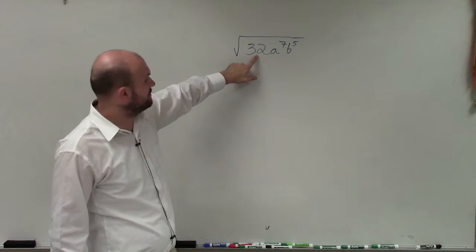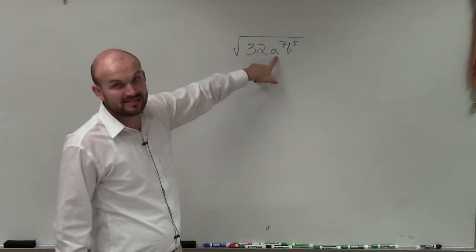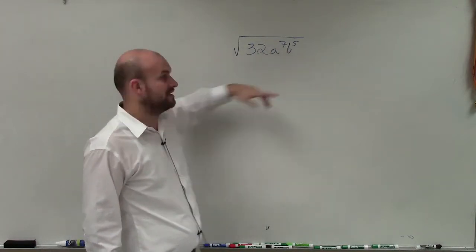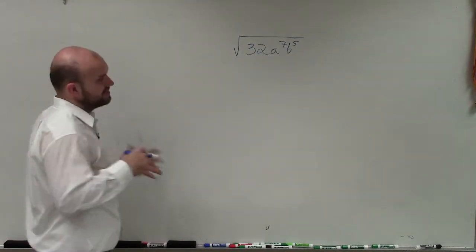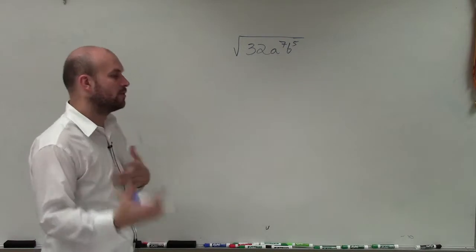Well, there's no number that multiplied by itself gives us 32, no number multiplied by itself that gives us a to the seventh or b to the fifth. However, there are some numbers that we can take the square root of to get an even term or integer.